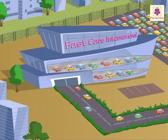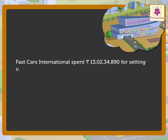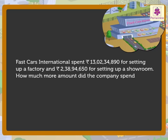Now we will solve one more subtraction story. Fast Cars International spent thirteen crore two lakh thirty four thousand eight hundred ninety rupees for setting up a factory and two crore thirty eight lakh ninety four thousand six hundred fifty rupees for setting up a showroom. How much more amount did the company spend for setting up the factory?